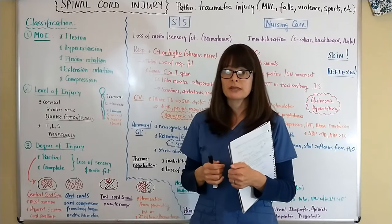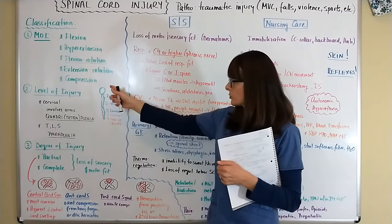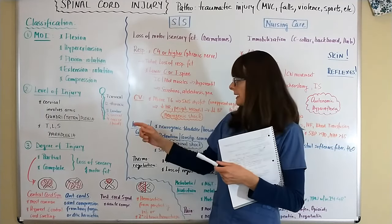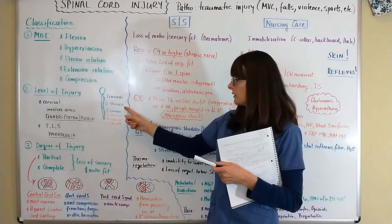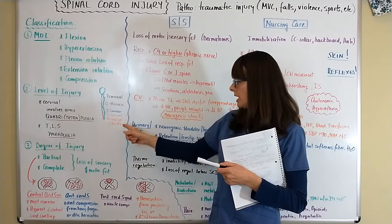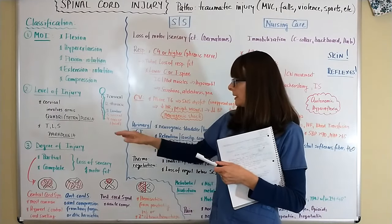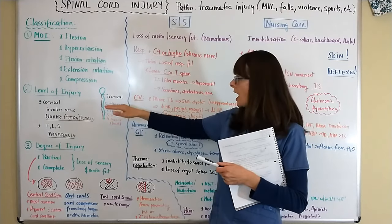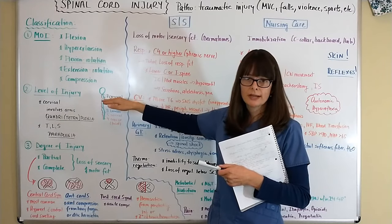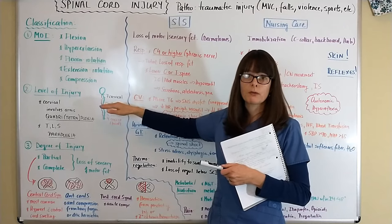Regarding the level of injury: there are seven cervical vertebrae, twelve in the thoracic spine, five in the lumbar spine, five in the sacral area, and four fused vertebrae in the coccyx. The higher up the injury, the more significant the signs and symptoms the patient will have, and the more significant the possible paralysis can be.